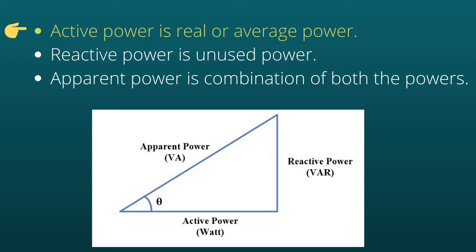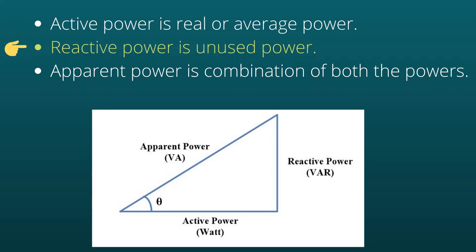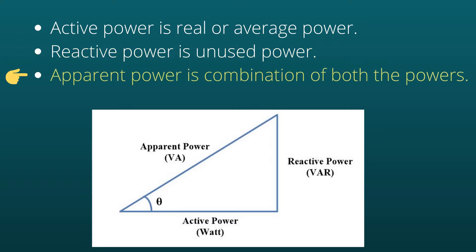Active power is known as the real power or average power. It is also known as the useful power. Reactive power is known as the unused power, and it is also known as imaginary power. Apparent power is a combination — actually a vector combination — of both these powers, and it is also known as complex power.